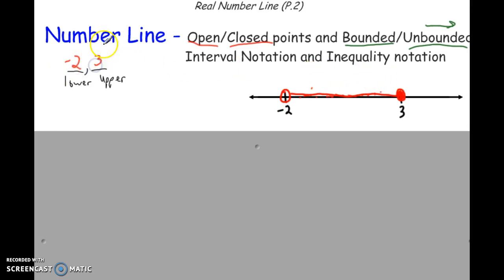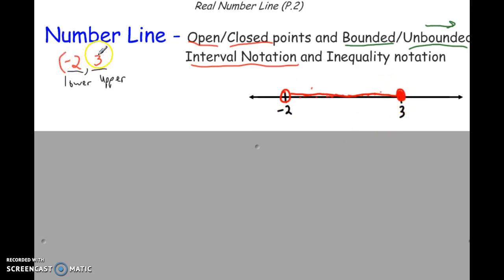You put grouping symbols around for interval notation. Since negative 2 is not included, we use a parenthesis to indicate non-inclusive. At 3, it is inclusive, so we use a hard bracket. The bracket means it includes the value of 3, and the parenthesis means it does not include negative 2.